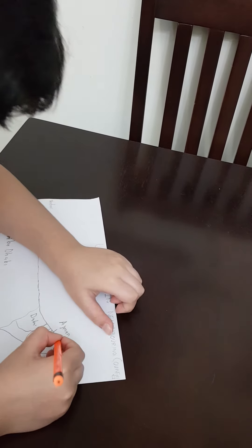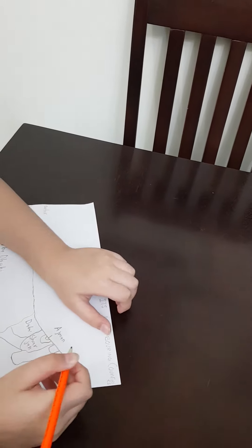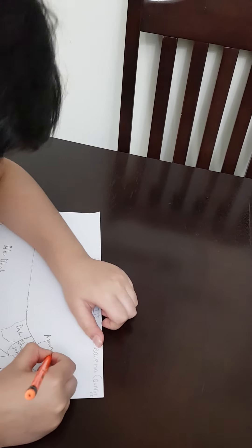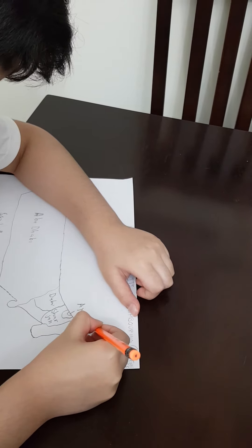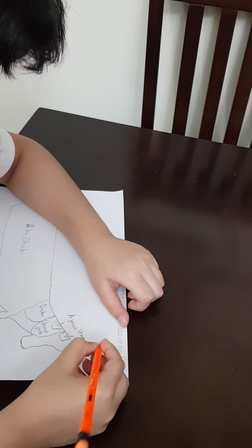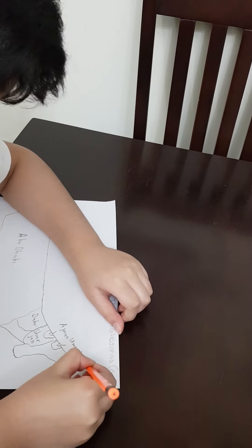And then next is Umm Al Quwain. It's almost the same size as Ajman, just the Umm Al Quwain is a little bit bigger. So that's how Umm Al Quwain.